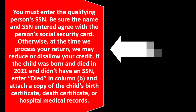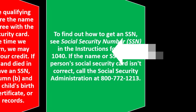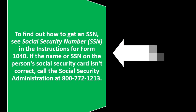If the child was born and died in 2021 and didn't have an SSN, enter 'died' in column B and attach a copy of the child's birth certificate, death certificate, or hospital medical records. To find out how to get an SSN, see the Social Security Number section in the Form 1040 instructions.